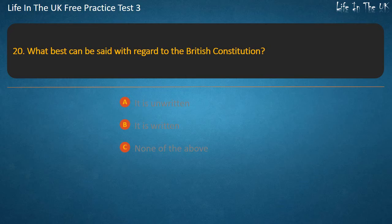Question 20. What best can be said with regard to the British Constitution? It is unwritten, It is written, or None of the above? Answer: It is unwritten.